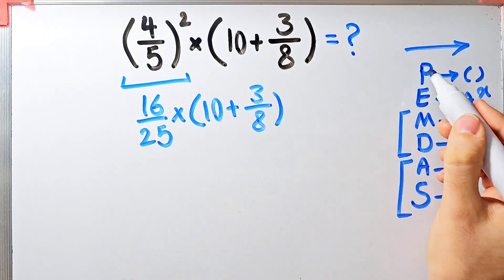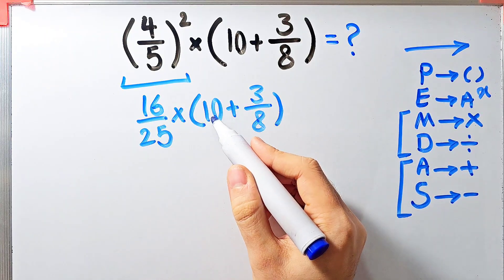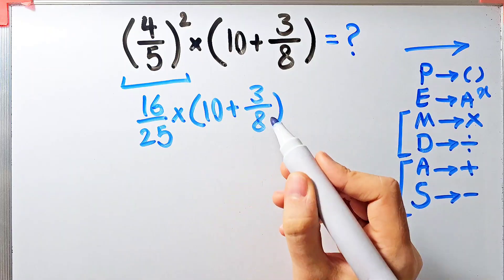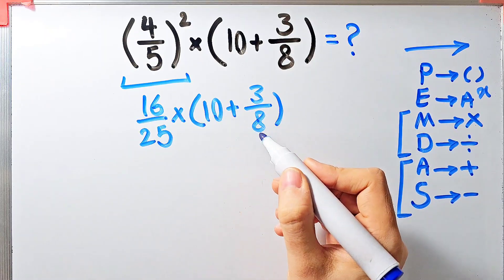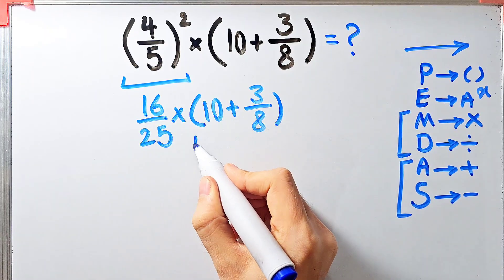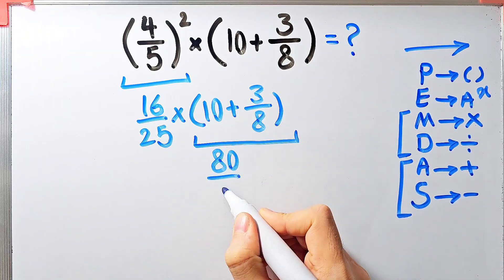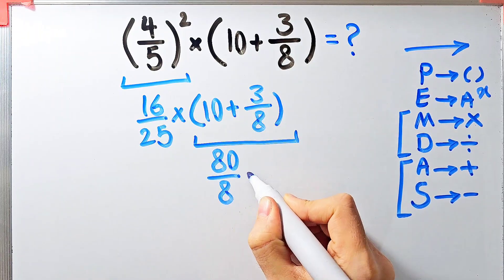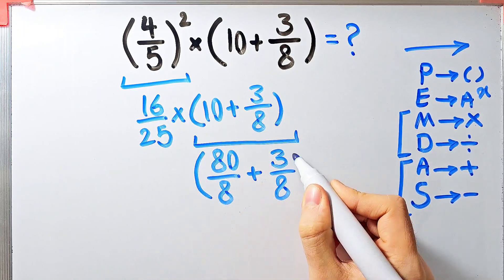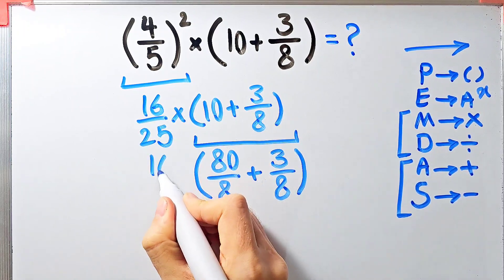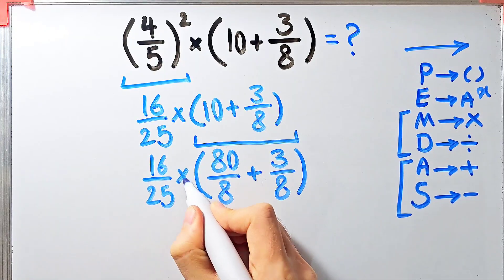We simplify the remaining parentheses. Inside these parentheses we have 10 plus 3 over 8. Since the denominator of this fraction is 8, we can write 10 as 80 over 8. Now we have 80 over 8 plus 3 over 8 inside these parentheses.